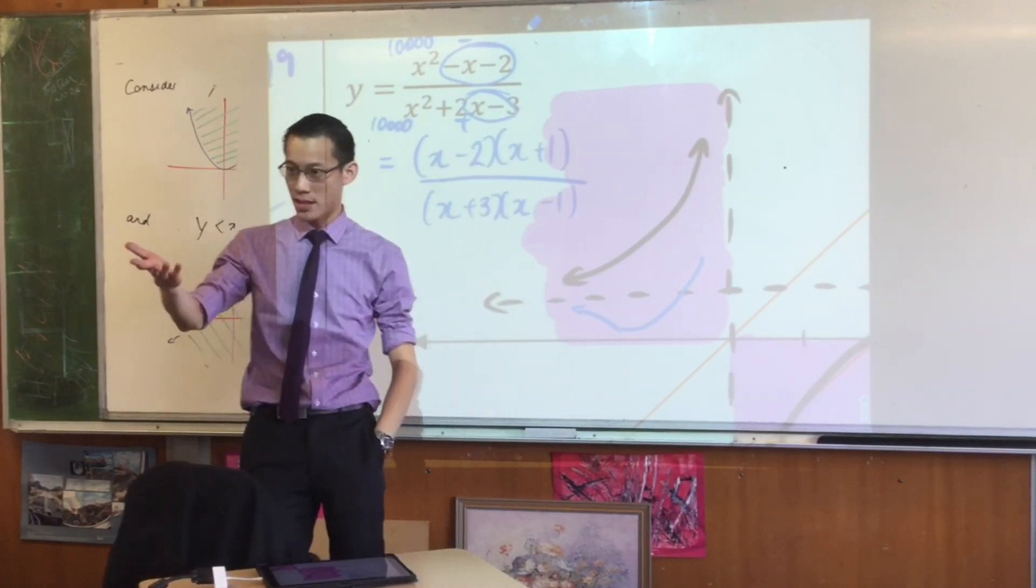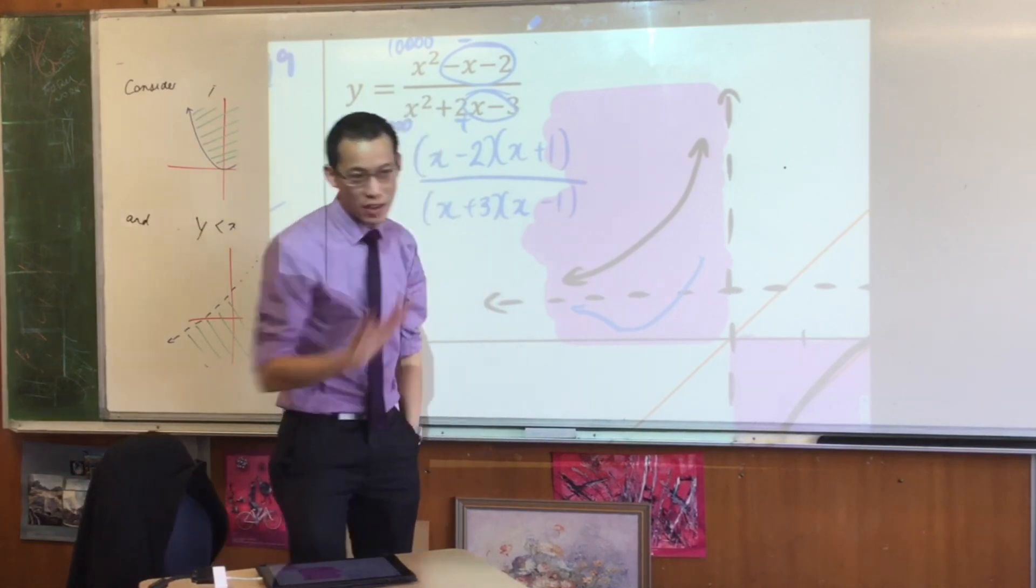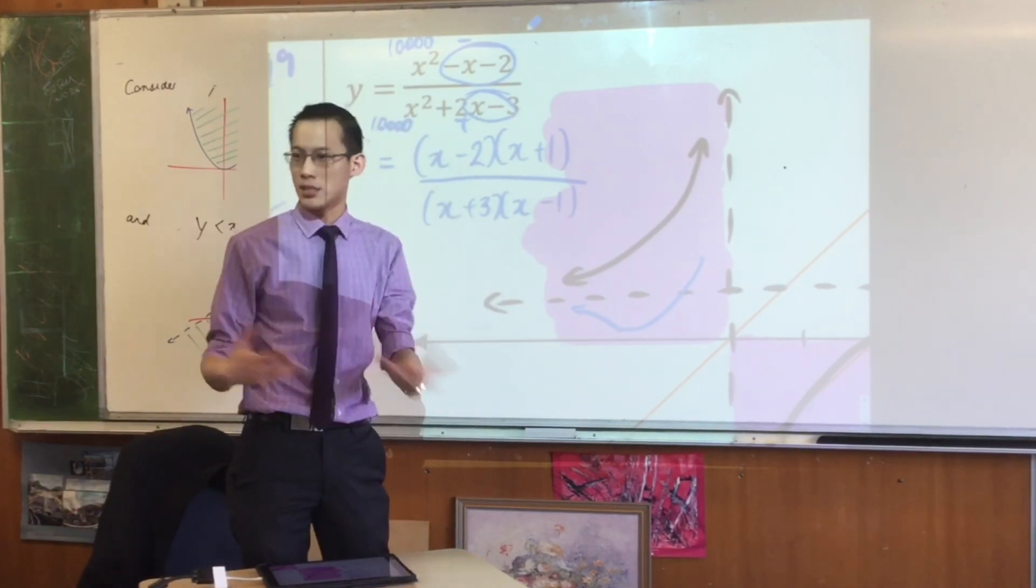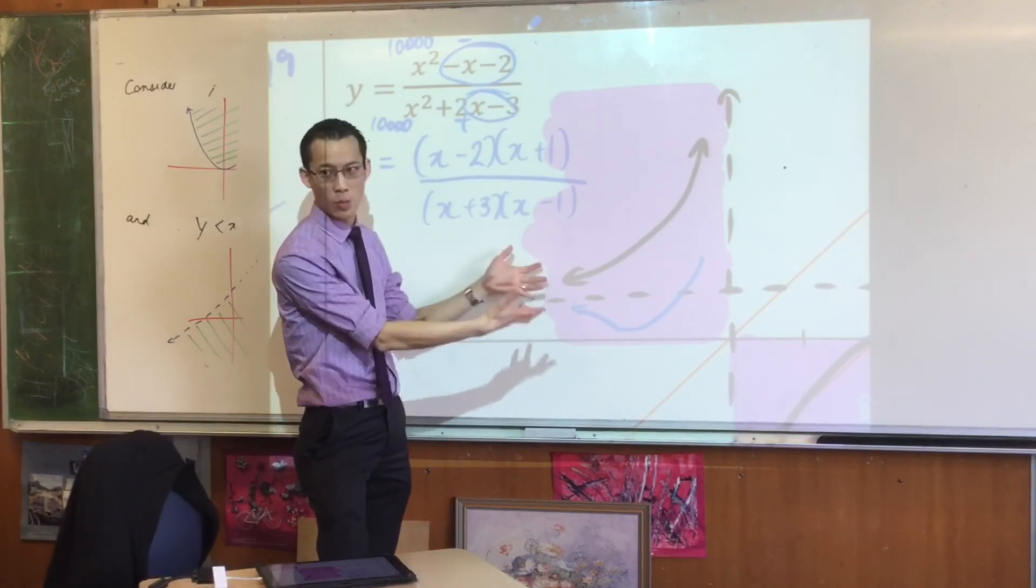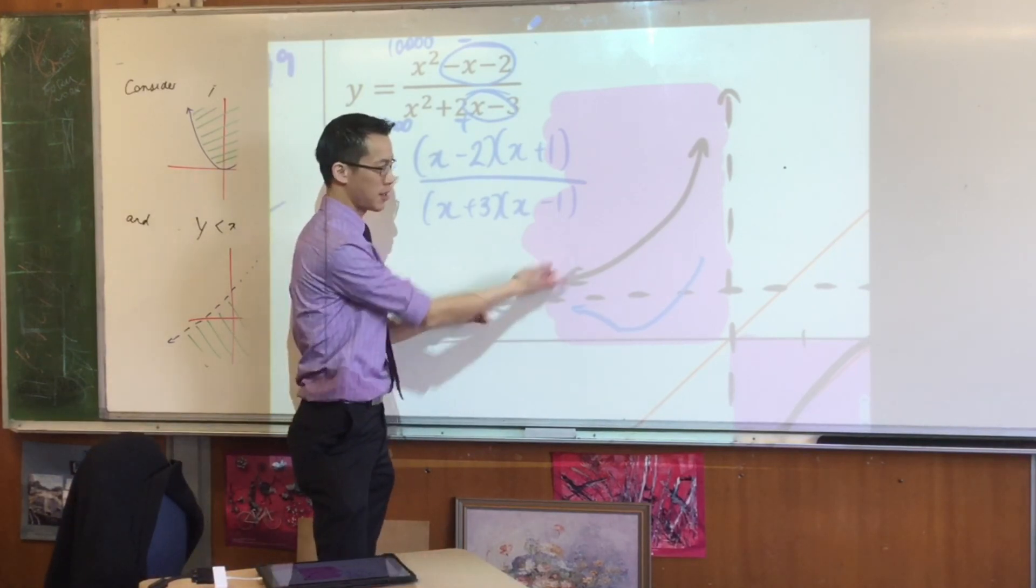So you've got a slightly bigger numerator over a slightly smaller denominator. That means you're going to be approaching from above. Does that make sense? So again later on when you learn calculus you can actually find out does it turn or does it not, but this is kind of a quick and dirty way to work out. I'm coming from this side therefore this is the shape.